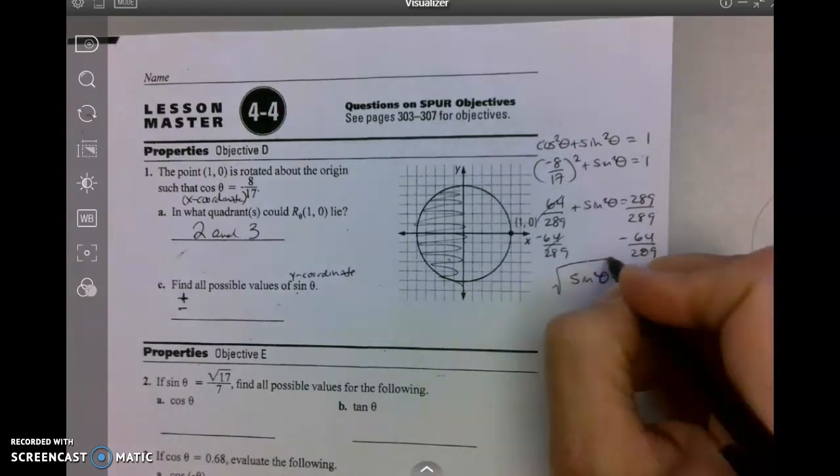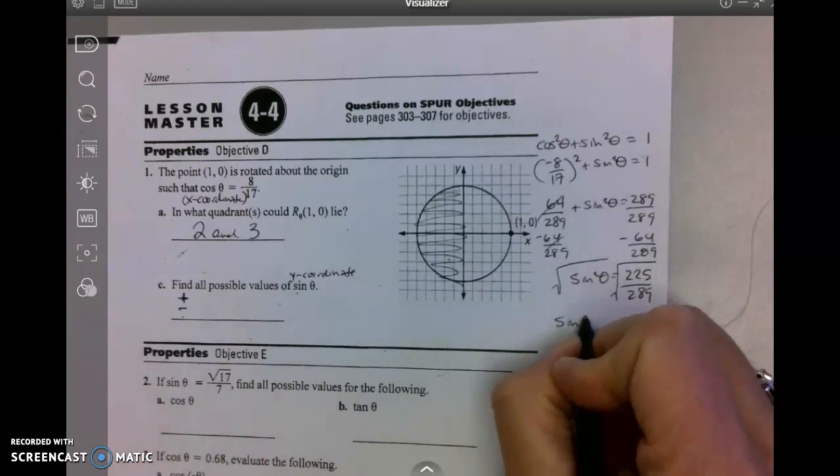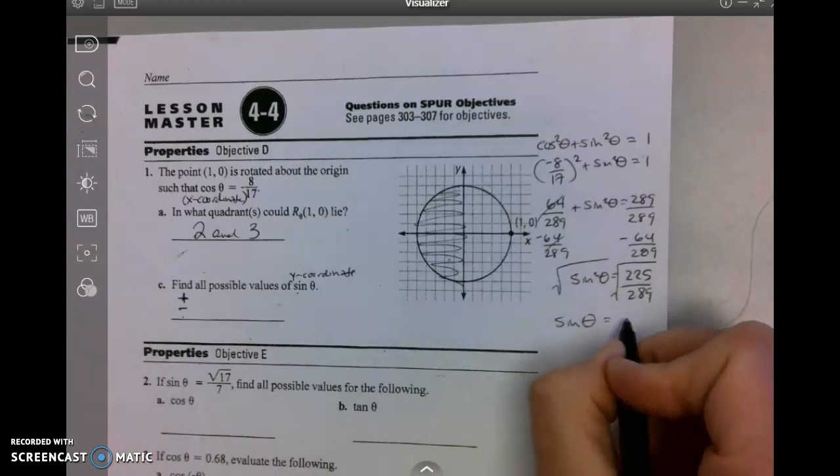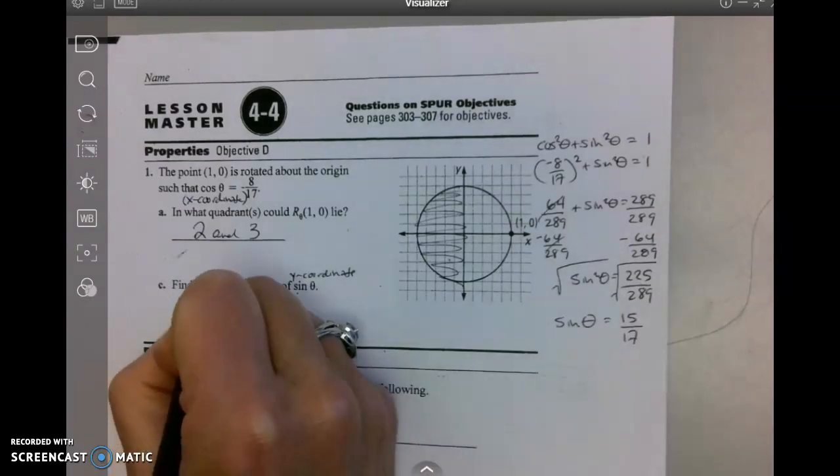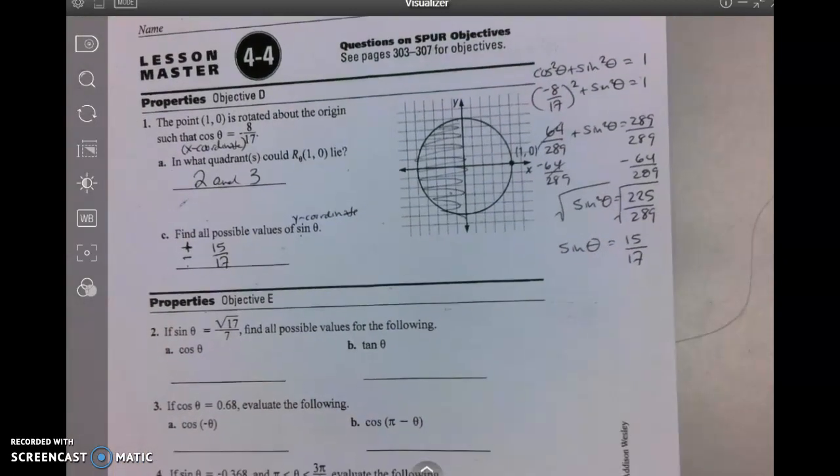Take the square root. I do want plus or minus. Square root of 225 is 15, square root of 289 is 17. So the answer is ±15/17.